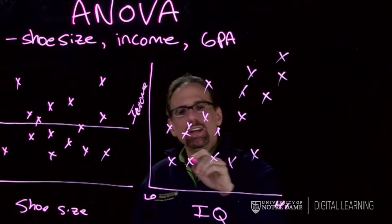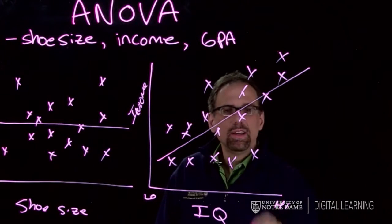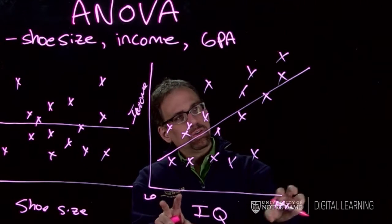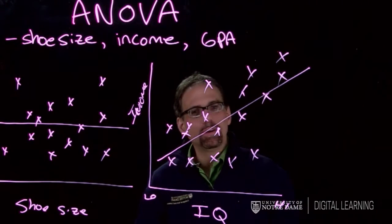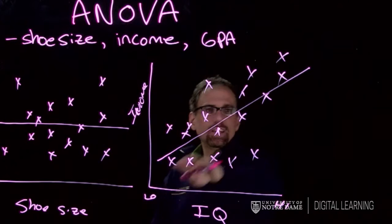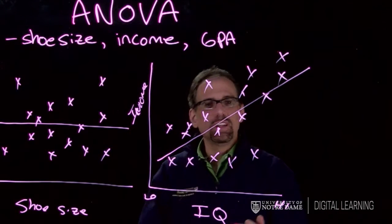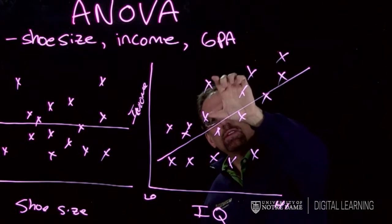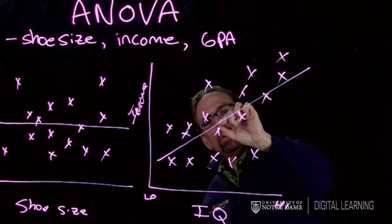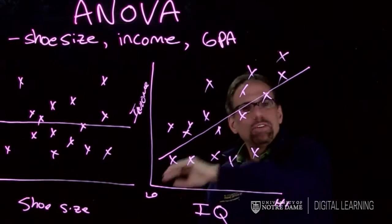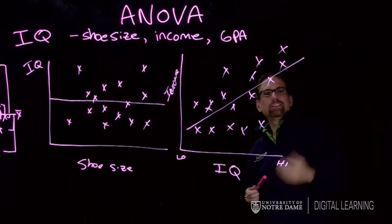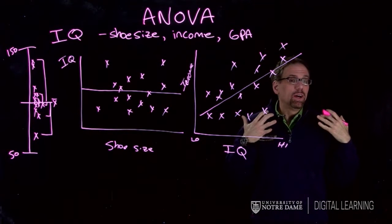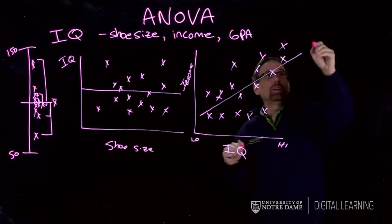So as people's IQ goes up, their income tends to go uphill. But this doesn't take care of all of the variation. There's still a lot of variation left. There's a difference between this score and the line. I mean, this person's way off the line. So there's a lot of variability that's left over after I stick the line in the data. Compare that to something like the GPA example, where we think it's going to account for a lot of the variability.